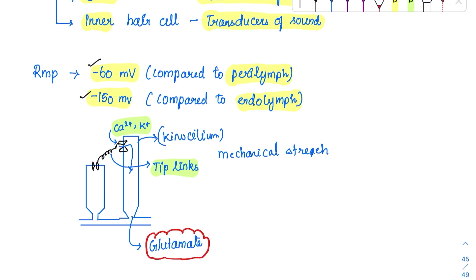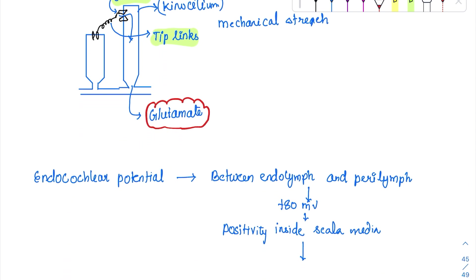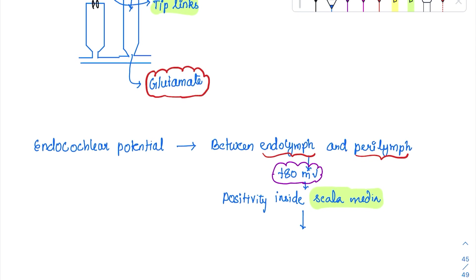There is one more important potential called the endocochlear potential — the potential between the endolymph and perilymph. This potential is positive, around plus 80 millivolts. The reason for this positivity is increased potassium ion secretion. There is continuous secretion of potassium ions from the stria vascularis, and because of this, the endocochlear potential is positive.